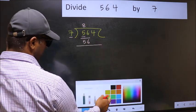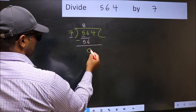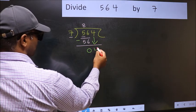Now you should subtract. 56 minus 56, 0. After this, bring down the beside number. So 4 down.